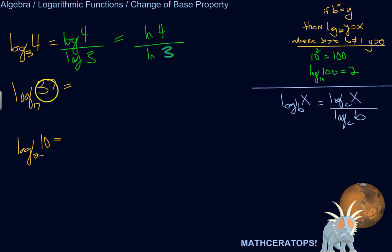So log base 17 of 37, when are you ever going to come up with a log with base 17? I don't know. You might. Log base 17 of 37 is equivalent to log base 10 of 37 divided by log base 10 of 17.